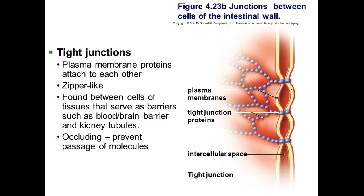Tight junctions, on the other hand, are more like zippers and prevent material from getting across. Plasma membrane proteins attach to one another almost like belts or zippers wrapping around the cells. We find these between cells of tissues that serve as barriers, such as the blood-brain barrier. Very few molecules can get into the brain — only very small molecules like carbon dioxide, oxygen, and glucose can cross the blood-brain barrier. A number of illicit drugs as well as alcohol can also cross it since alcohol is a small molecule. We also find tight junctions in the kidney tubules because the kidneys filter out waste. These tight junctions are described as occluding, meaning they prevent the passage of molecules.